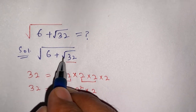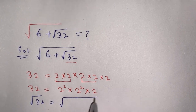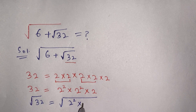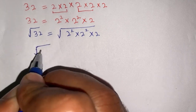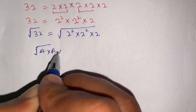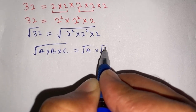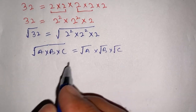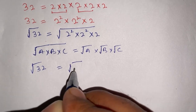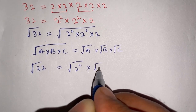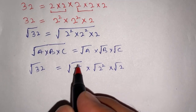Now we find the value of square root of 32. Taking the square root, we get square root of 32 equals square root of 2-squared times 2-squared times 2. We know that square root of a times b times c equals square root of a times square root of b times square root of c. Thus square root of 32 equals square root of 2-squared times square root of 2-squared times square root of 2.